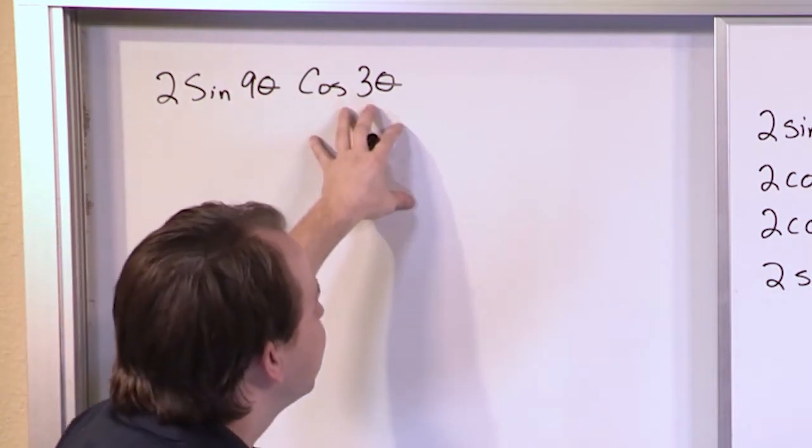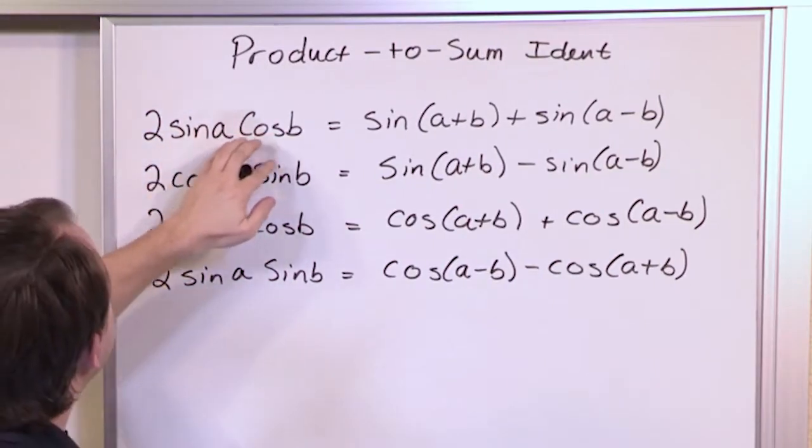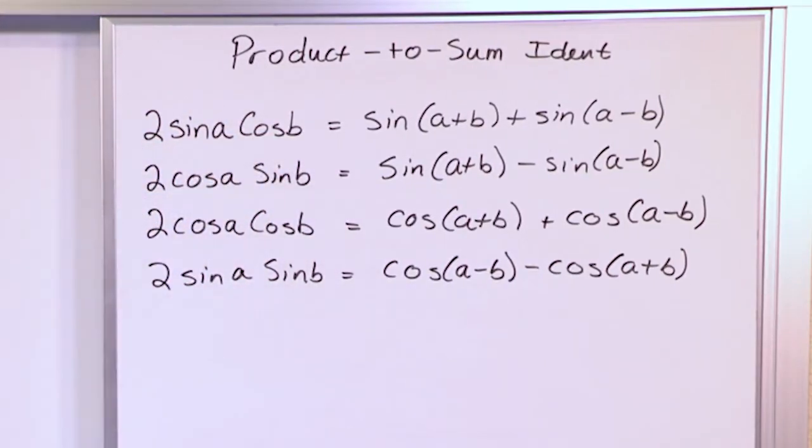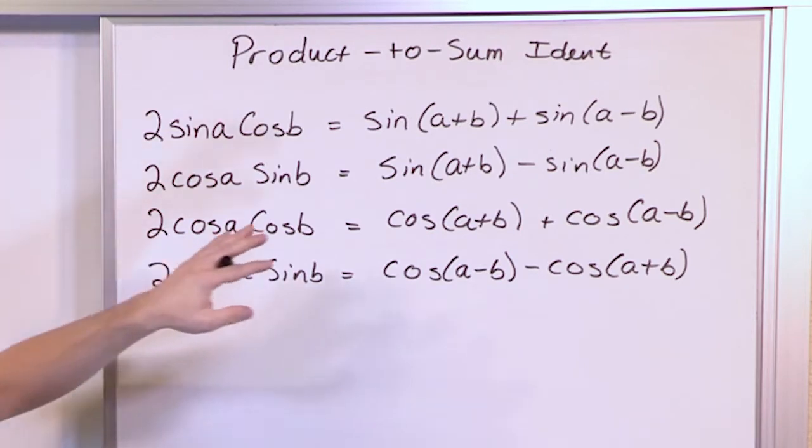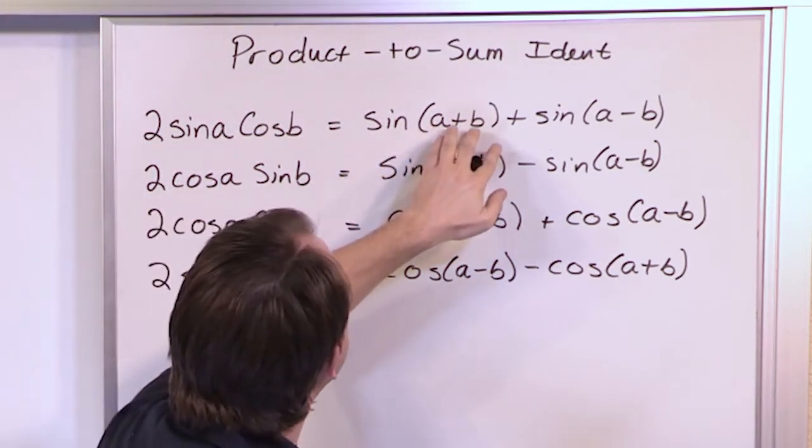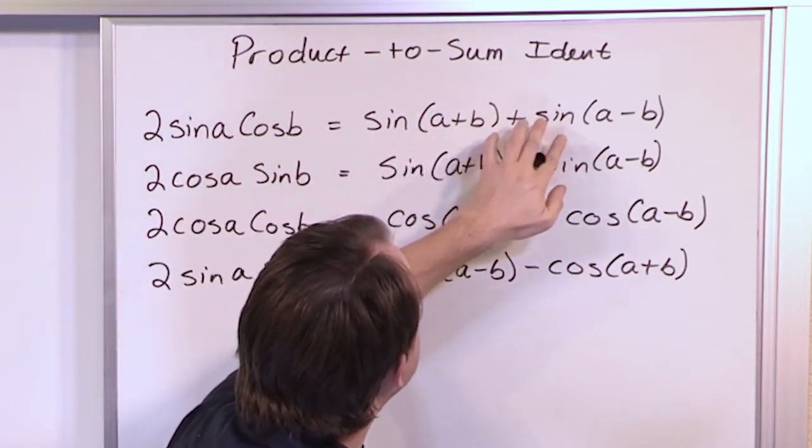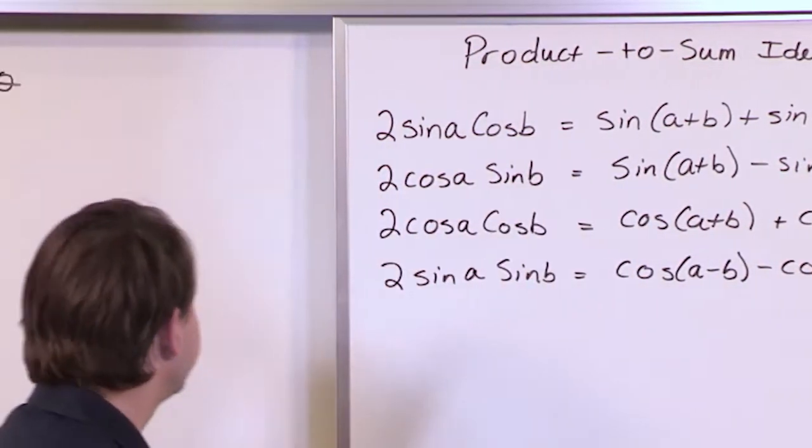Well, here I have sine times cosine. Here I have sine times cosine. Notice there's a 2 in front here, and I have a 2 in front in my problem. So really, it's going to be the sine of the sum of these angles plus the sine of the difference of those angles.